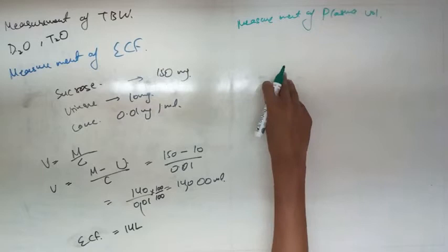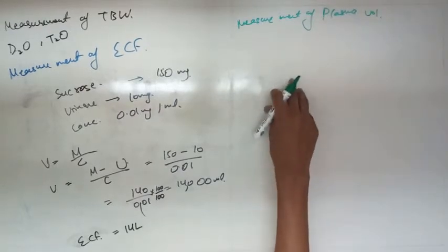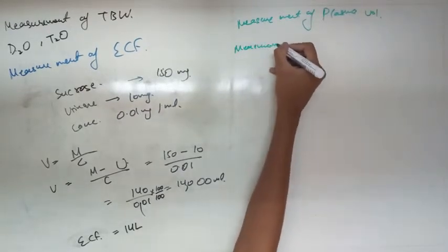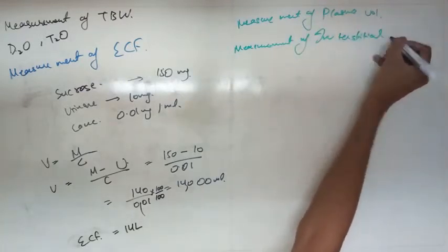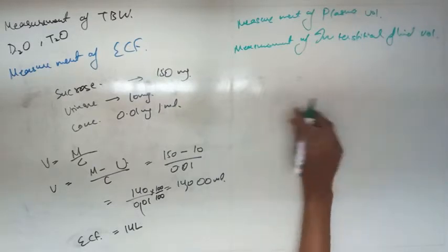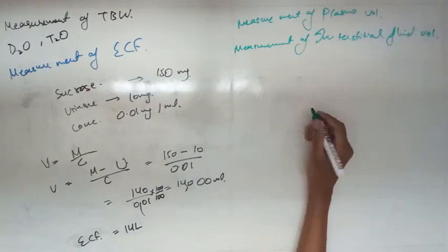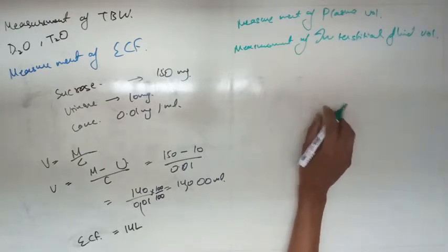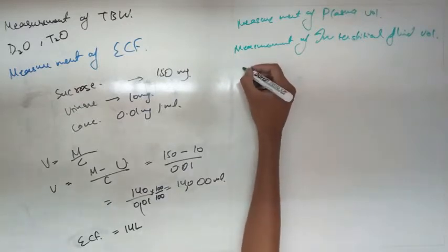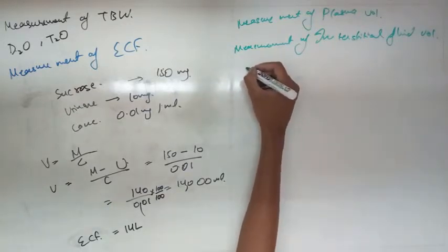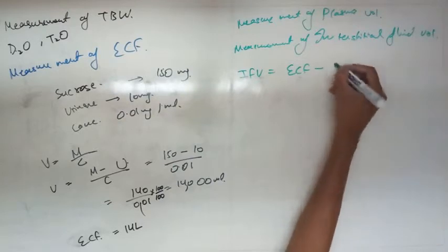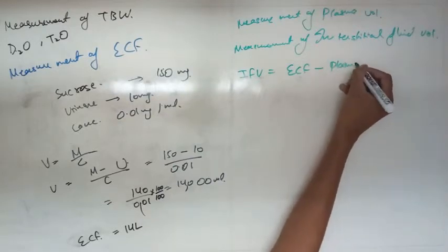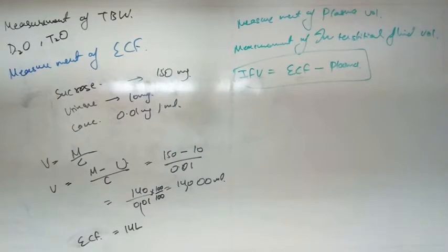Measurement of interstitial fluid volume: it cannot be measured directly. It is calculated because we know that ECF contains plasma and interstitial fluid. So we subtract the volume of plasma from the ECF. The formula is: Interstitial fluid volume = ECF volume − plasma volume.